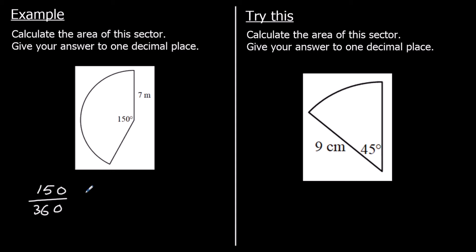We've got 150 degrees out of 360 degrees, and we want that fraction of the area of the whole circle, which is pi times the radius squared.